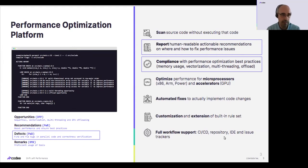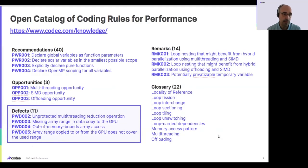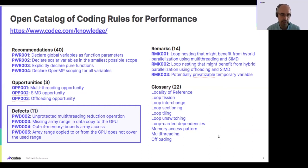Looking at the catalog that we have open — and we encourage you to use it, review it, and learn from it — please feel free to reach out to us or to NERSC so we can identify new actions or elements to add. We are always working collaboratively with the community. From the OpenC catalog visible on the website, we will focus on the defects section.